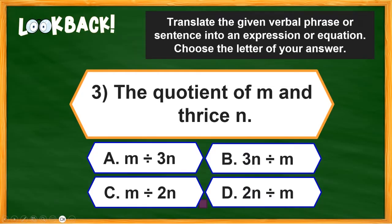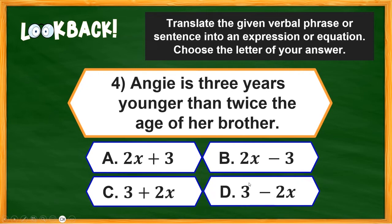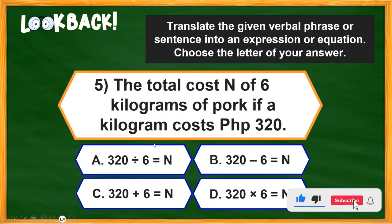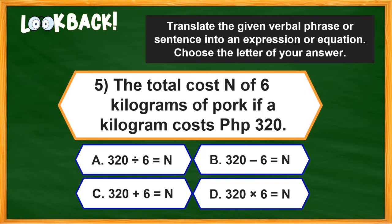For number three: 'The quotient of M and thrice N.' What should be the answer — A, B, C, or D? Number four: 'Angie is three years younger than twice the age of her brother.' Is it A, B, C, or D? And number five: 'The total cost of six kilograms of pork if a kilogram costs 320 pesos.' What should be the proper number sentence — A, B, C, or D?